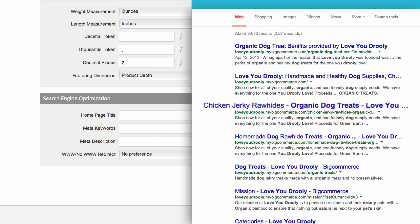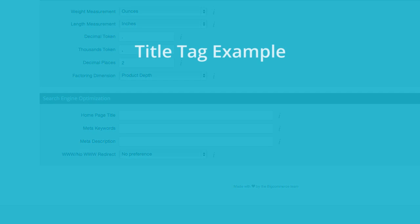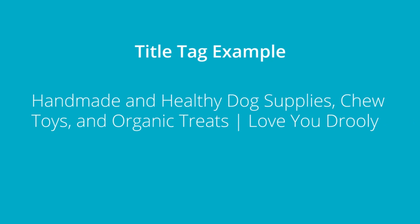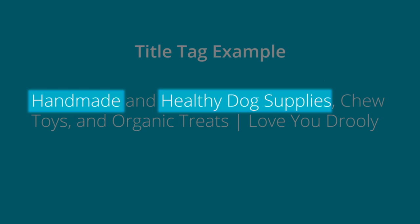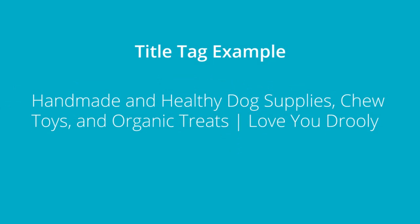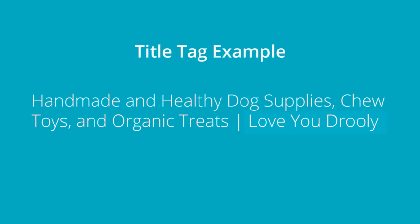A title tag is kind of like the title of a book. It's the link to your page from a search engine, so naturally we want to make it pretty enticing and accurate. First tip is to try and place your keywords towards the front, as the most important and descriptive words should always go first. You can place your business name at the end. Both users and search engines are going to really thank you for this.